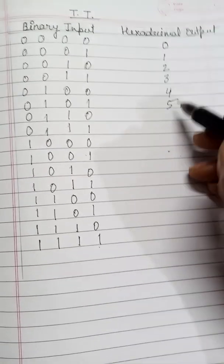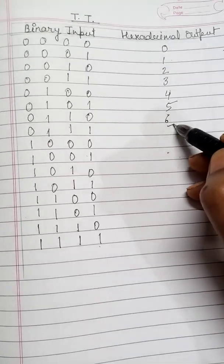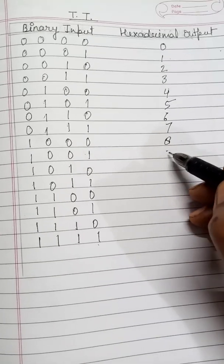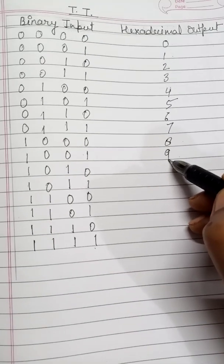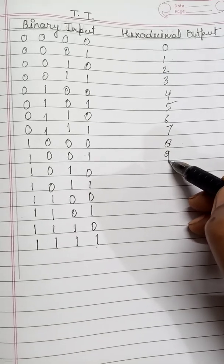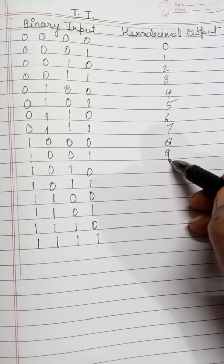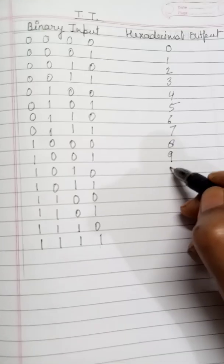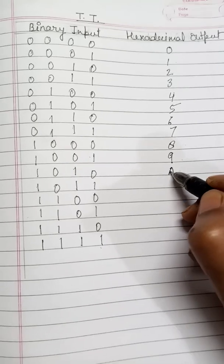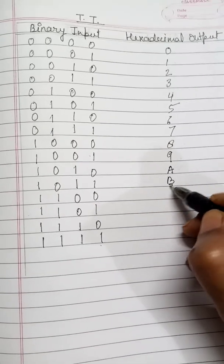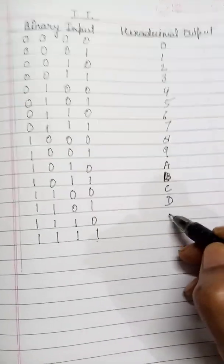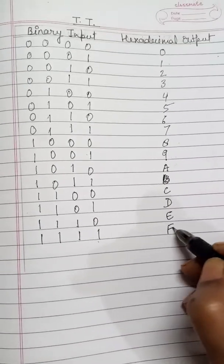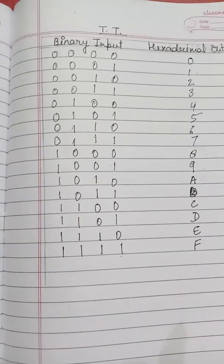One, two, three, four — this will be equivalent to five, then six, then seven, eight, nine. After that in hexadecimal we don't write 10, 11, 12 — we start with A, B, C, D, E, and F. So this is the truth table.